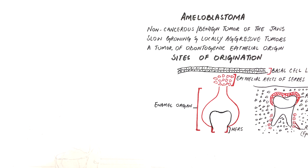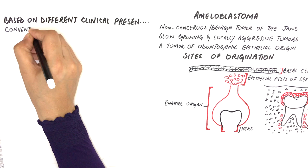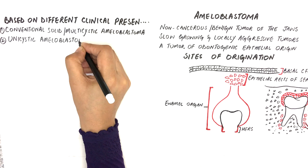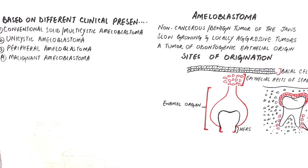Ameloblastomas can be divided into four main types based on their different clinical presentations. These four types are: the conventional solid or multicystic ameloblastoma, unicystic ameloblastoma, peripheral ameloblastoma, and malignant ameloblastoma. The conventional type accounts for 75 to 86 percent of all cases. Unicystic types account for about 13 to 21 percent, and the peripheral type, which arises in the gingival soft tissues, accounts for only one to four percent of all cases.